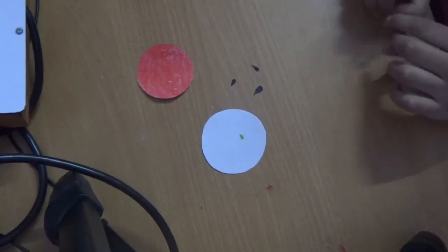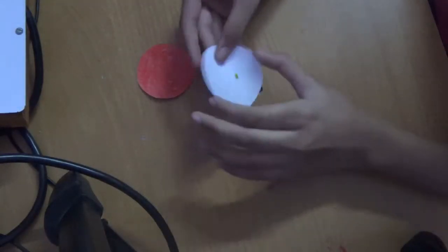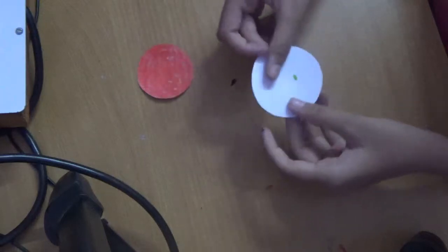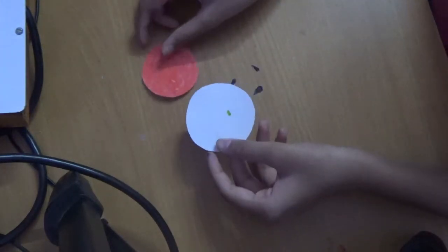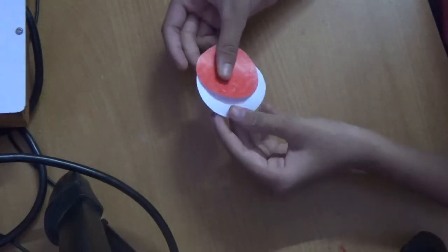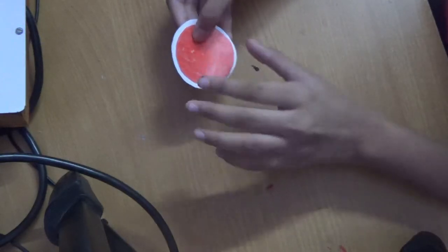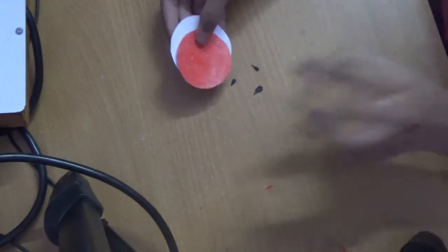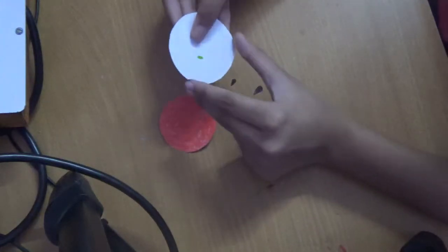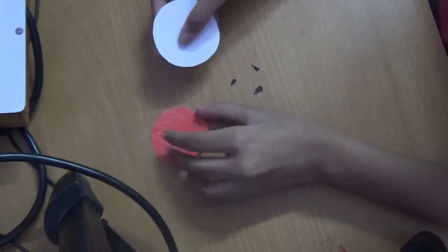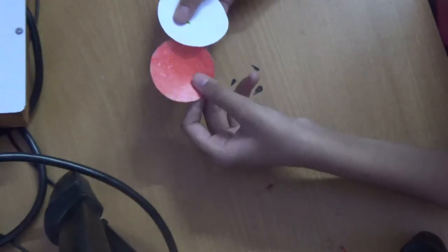Hi guys, today I am going to make a watermelon rakhi. It is very easy, that's why I am making this. The supplies we need are two circles of paper.